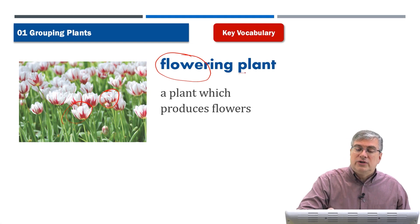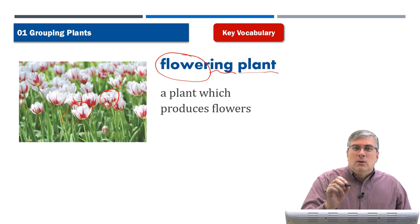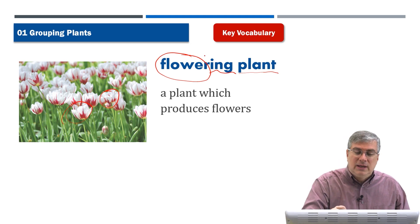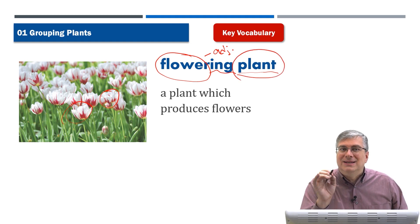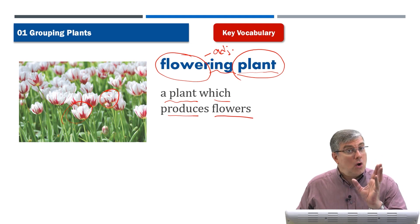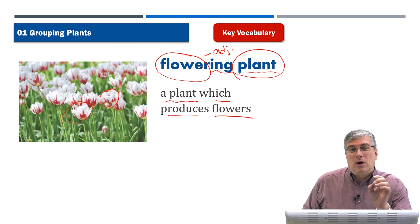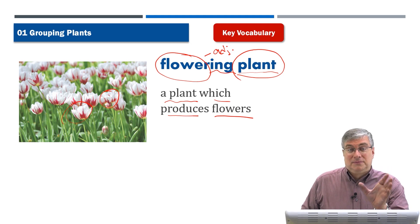You know what a plant is, but here we're combining the two words using I-N-G. So 'flowering' changes the noun 'flower' into an adjective to describe what kind of plant it is. A flowering plant is a plant which produces flowers. Not all plants produce flowers — only certain types do, and we call those flowering plants.